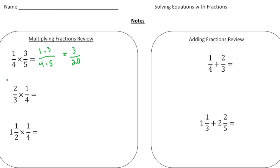One rule in this problem — you're allowed to cross-reduce. So if you look at the two and the four, if we had a fraction two-fourths, we could reduce that down to one-half. So I'm going to make this a one and make this a two. I can't reduce the one and the three, so now we just multiply the numerators: one times one is one, and three times two is six.